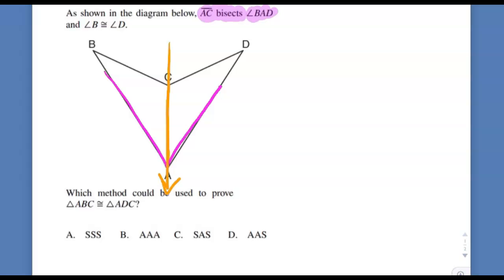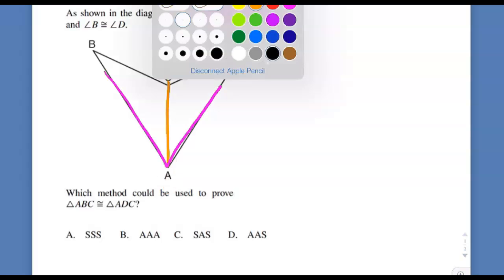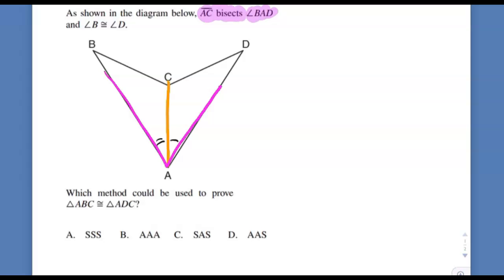So that big pink angle there, B to A to D, is being bisected by this spear coming through here. Bisect means to cut into two equal angles or two equal parts. And since this was one big angle, this thing divided into two equal angles - it bisected it. So now we know we have two congruent angles right there because that's what a bisector made happen. It also tells us that angle B is the same as angle D, so we know that much so far.